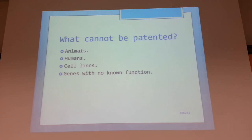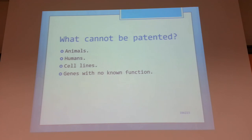What cannot be patented includes: animals (for example, a new breed variety), humans — even if you genetically modify them by injecting a plasmid and integrating it into your genome, creating a GMO, you can't patent a human — cell lines such as the HeLa (Henrietta Lacks) cell line, and genes with no known function. You can't take a fragment of DNA and patent it if it has no purpose. Your patent should be able to be industrially produced; patents for enzymes that can be produced in an industrial setting have more value than genes with no industrial viability.